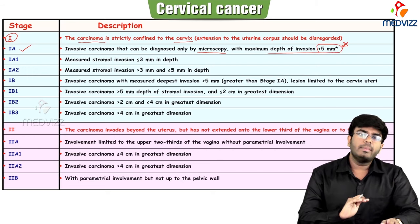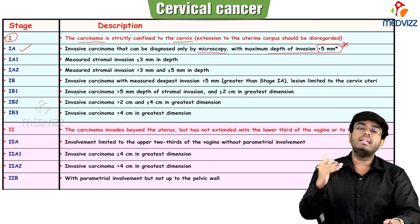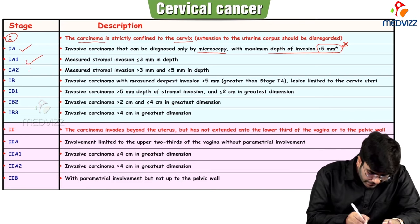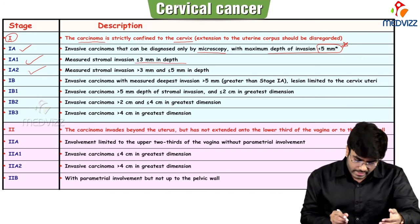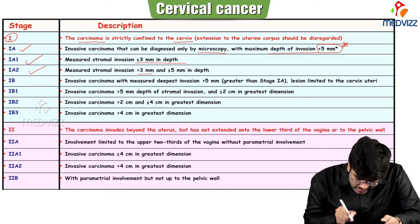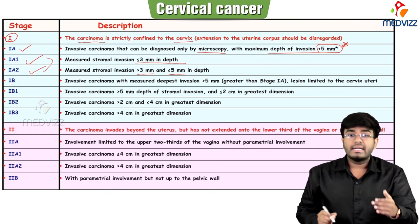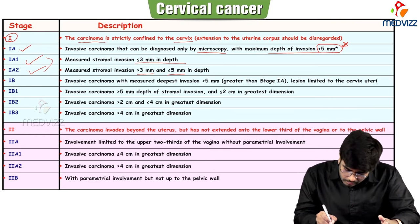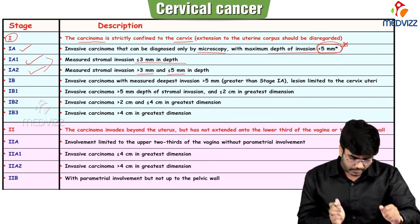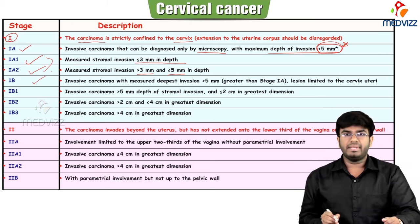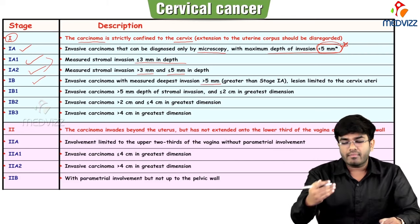Stage 1a is divided into 1a1 and 1a2. In 1a1, depth of invasion is less than 3 millimeters. In 1a2, depth of invasion is more than 3 millimeters but less than 5 millimeters. These are microscopic cancers only, distinguishable only by the depth of stromal invasion.